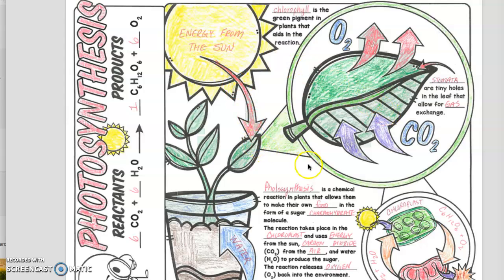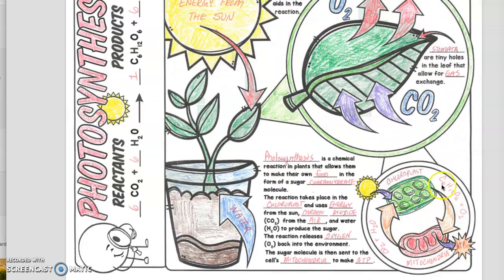So the sunlight gets absorbed in the leaves in a small little organelle called a chloroplast. The chloroplast contains chlorophyll. Chlorophyll is a pigment that makes the plant green.